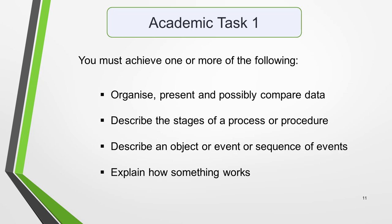Your academic task 1 essay will be assessed in relation to your ability to achieve one or more of these criteria: organise, present, and possibly compare data; describe the stages of a process or procedure; describe an object, event, or sequence of events; or explain how something works.